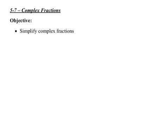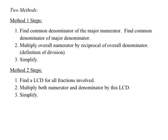Section 5.7, Complex Fractions. The objective here is to simplify complex fractions. We've got two methods. The first method is to find a common denominator of the whole numerator, then find a common denominator of the whole denominator. Then we'll multiply the overall numerator by the reciprocal of the overall denominator, because when we divide, we multiply by the reciprocal — that's the definition of division — and then simplify. The other option is to find a least common denominator for all the fractions involved, then multiply both the numerator and denominator by this LCD, and then simplify. We'll see that we get the same answer for both methods. We're going to do both methods for each of these problems.